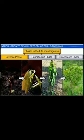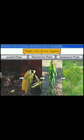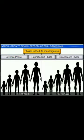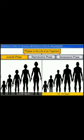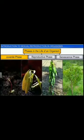Interestingly, the duration of the juvenile or vegetative phase varies in different organisms. In human beings, for instance, the juvenile phase lasts for 13 to 16 years in the case of females and 13 to 15 years in males. Whereas a mango tree remains in the vegetative phase for around 3 to 5 years.